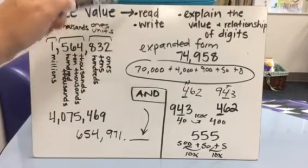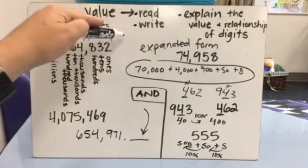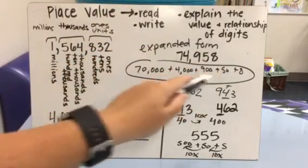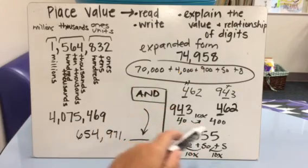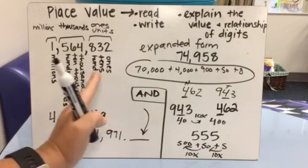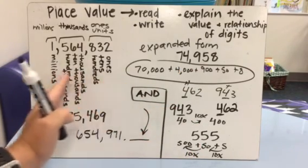So keep these in mind when your fourth grader is reading multi-digit numbers, writing multi-digit numbers, having to explain the value behind those digits, and then also the relationship that they see as they're moving through the place value.